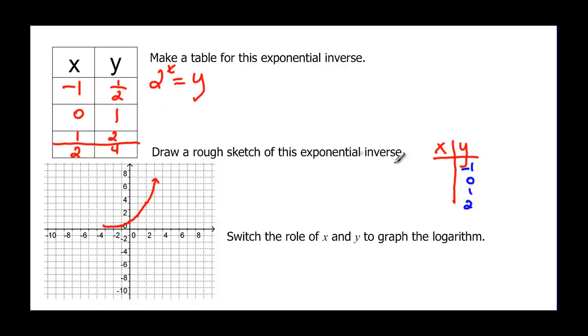And then for my x values they are the y values. So negative one went with one half so now my x is one half. Zero is with one so now x is one. Then we have two and then two went with four. So one half one would be this point about right there. One zero would be on the x axis. Two one and then four two. And we get a graph that looks something like this one.